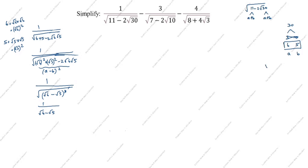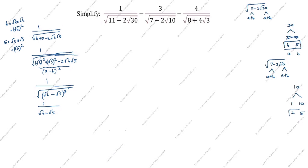Next we simplify root of (7 minus 2 root 10). We split 7 as a plus b and 10 as a plus b. Trying factors of 10: 1 times 10 gives sum 11, and 2 times 5 gives sum 7 — which matches. So a is 5, b is 2.